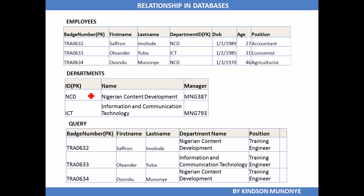In the employees table we have a field called department ID, and that is also a key — but not a primary key in the employees table. Since it is a primary key in the departments table but appears in the employees table, we say it is a foreign key in the employees table while it is a primary key in the departments table. A foreign key is a key in a particular table that is a primary key in another table.